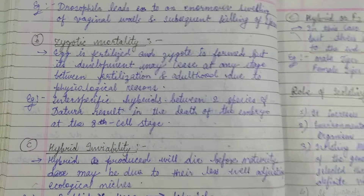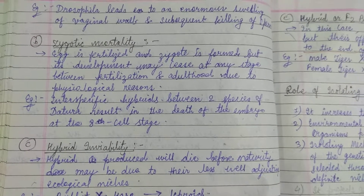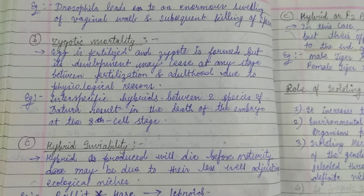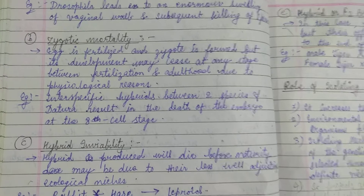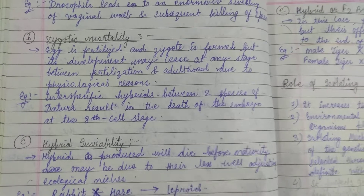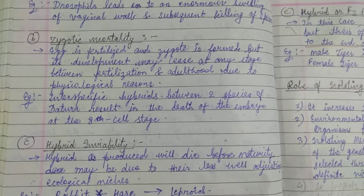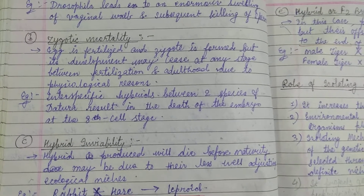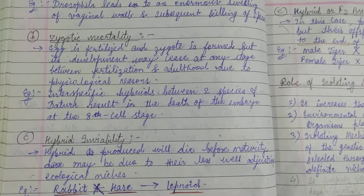In zygotic mortality, fertilization occurs and a zygote is also formed, but its development does not proceed further — it does not become an adult and is thus isolated.